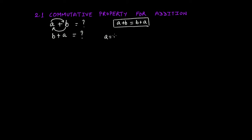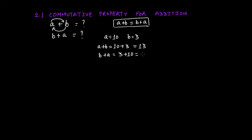Let's say a = 10 and b = 3. For a + b: 10 + 3 = 13. For b + a: 3 + 10 = 13. We're getting the same number in both cases. Therefore, addition of integers follows the commutative property — because a + b = b + a, we get the same integer in both cases.